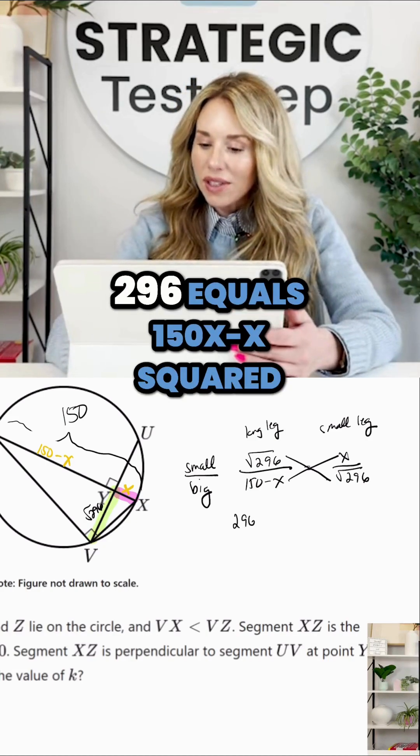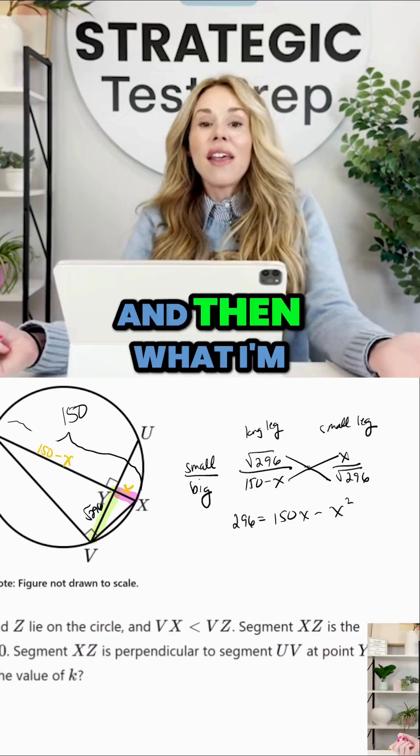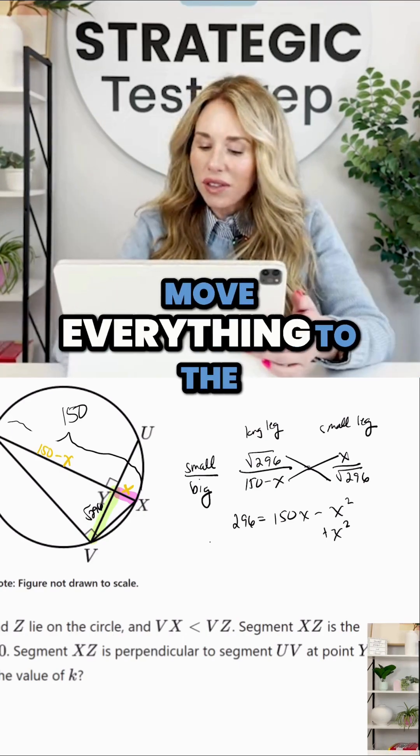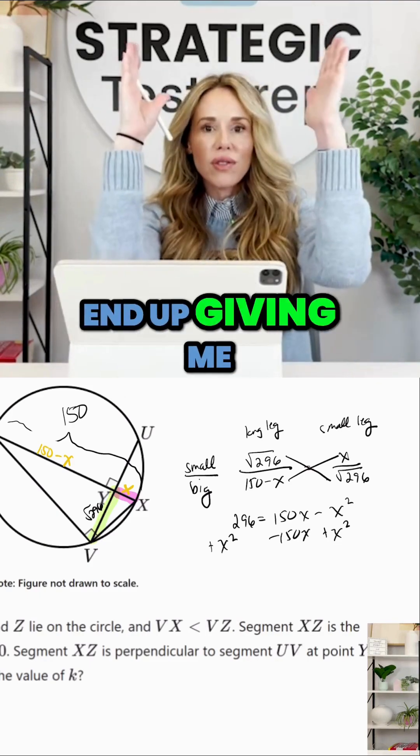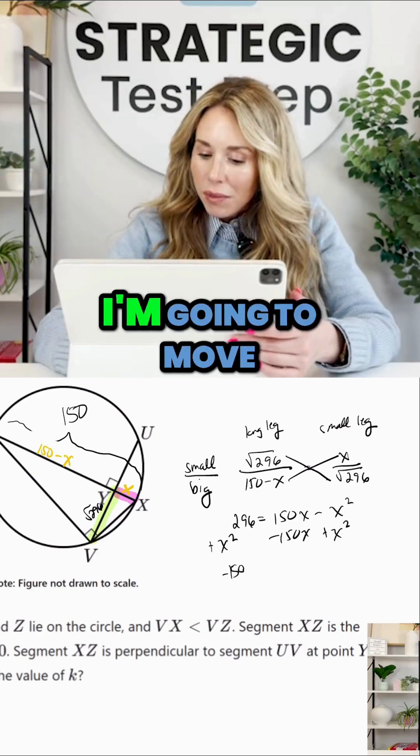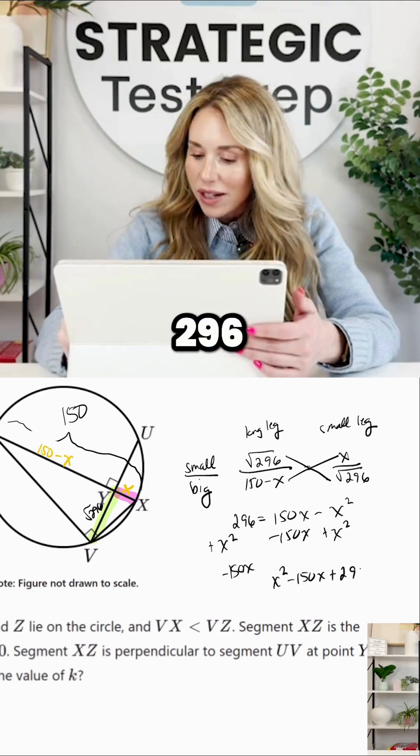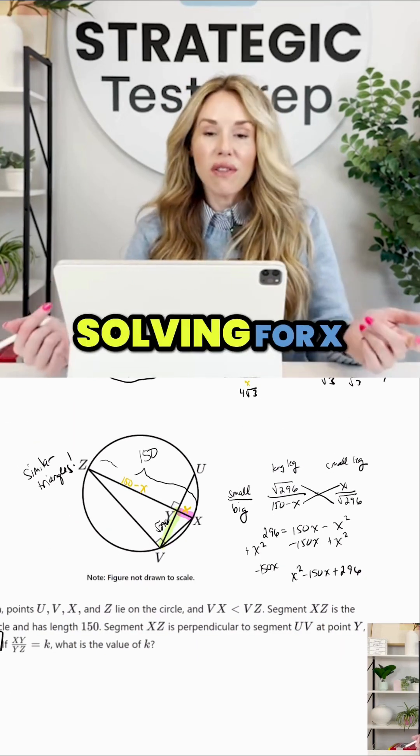We end up with 296 equals 150X minus X squared. And then what I'm going to do is basically pop that into Desmos, move everything to the other side so it's all on one side. Otherwise, Desmos gets weird with quadratics and they end up giving you lines straight up and down. So I'm going to move all these terms. So I have a positive X squared minus 150X plus 296. And that's what I'm going to put in Desmos to see the solutions because right now we're solving for X.